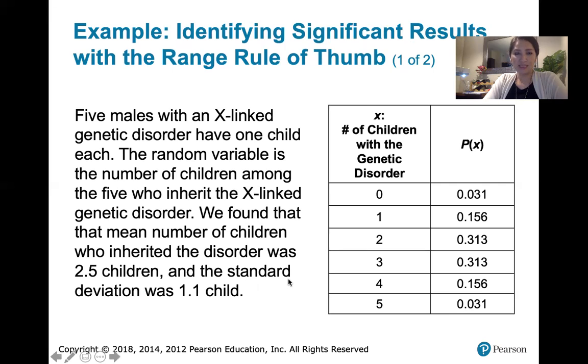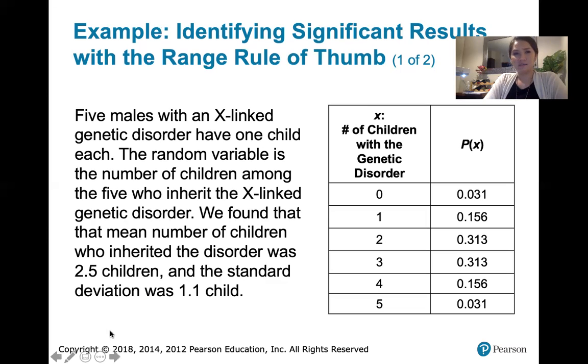In another video, we found the mean number of children who inherited this disorder to be 2.5 children, and we found that the standard deviation was about 1.1 children.